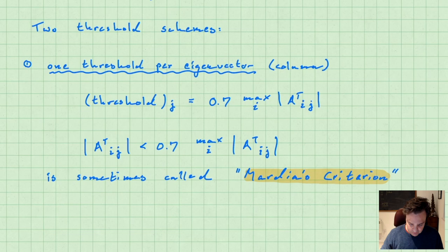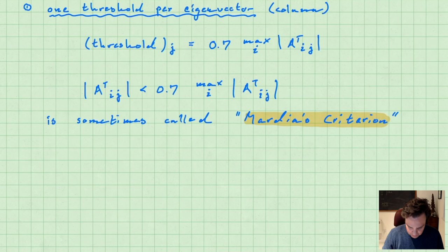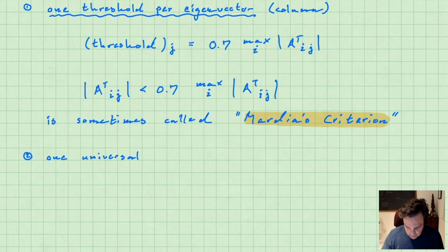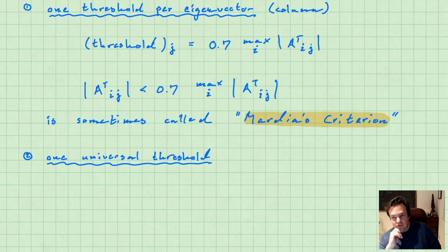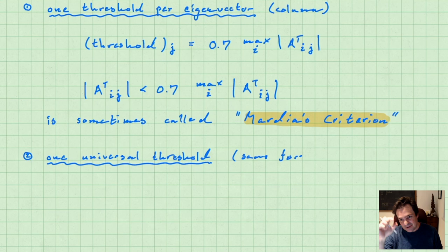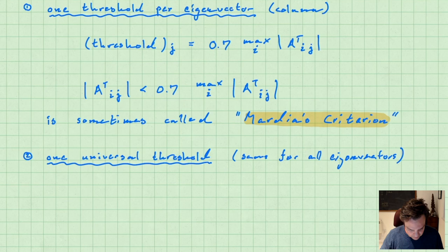The other thresholding scheme is just one universal threshold, based on the number of variates in the problem. Each eigenvector is a unit vector with length one, so you can make a universal threshold based partly on the magnitude and partly on the number of dimensions.